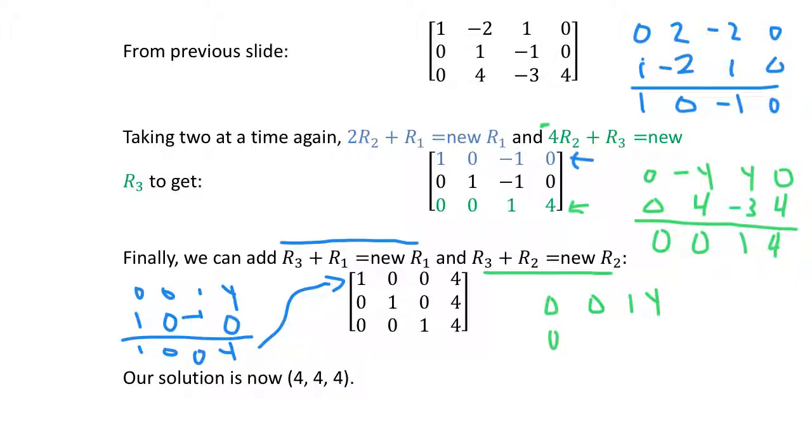They're not straight lines. That's all right. Straight's overrated. 0, 1, 0, 4. And of course, my third row, 0, 0, 1, 4. Our solution, then, is x = 4, y = 4, and z = 4.